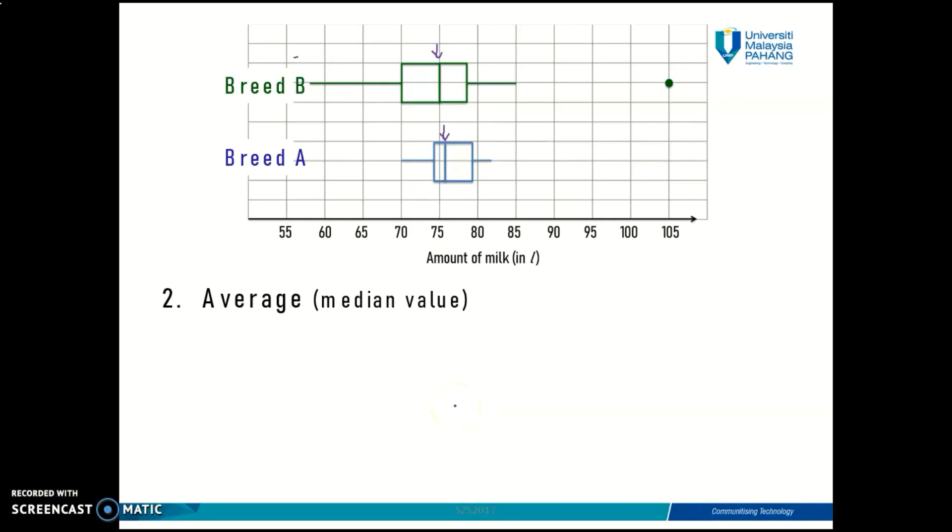This is one advantage of using box plots to represent your data. When you draw box plots, you can plot more than one data set on the same axis, and by doing so you can compare these different sets in terms of their average. You can see which set has a higher value and make important conclusions. For example, we can say that Breed A is better than Breed B because they produce slightly more milk.